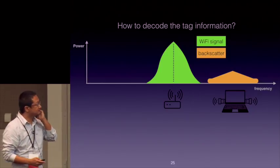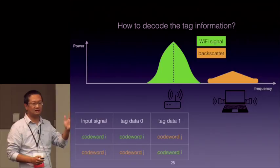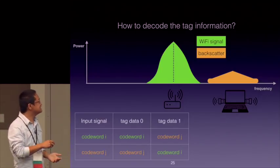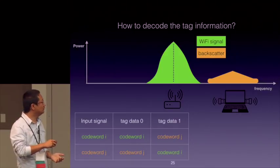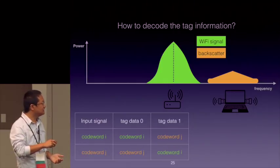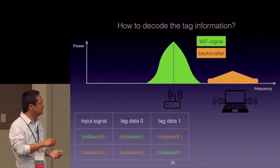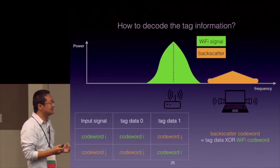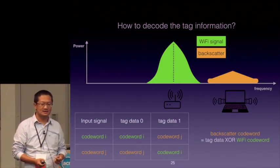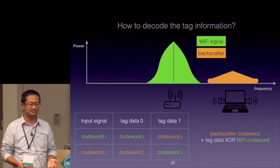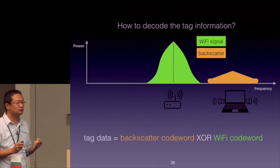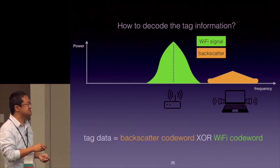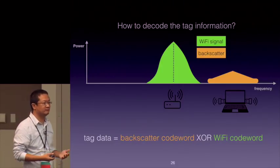So how to decode the tag information? Looking at the truth table between the tag data and the incoming Wi-Fi signal: if the tag transmits data zero, the backscatter signal is exactly the same as the incoming Wi-Fi signal; if the tag transmits data one, the reflected signal is different. In summary, the backscatter signal is actually an XOR between the tag data and the incoming Wi-Fi signal. Decoding the tag data is therefore simple — as long as we XOR the backscatter codeword with the incoming Wi-Fi codeword, we can recover the tag information.